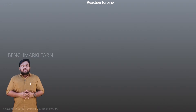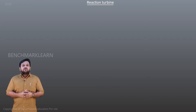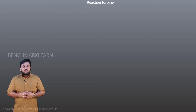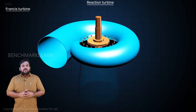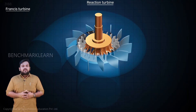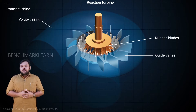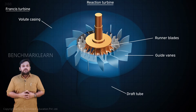The reaction turbine is used for medium head and discharge, or low head and high discharge. Commonly used reaction turbines are the Francis turbine and the Kaplan turbine. The main parts of the Francis turbine are the volute casing, guide vanes, runner blades, and a draft tube.